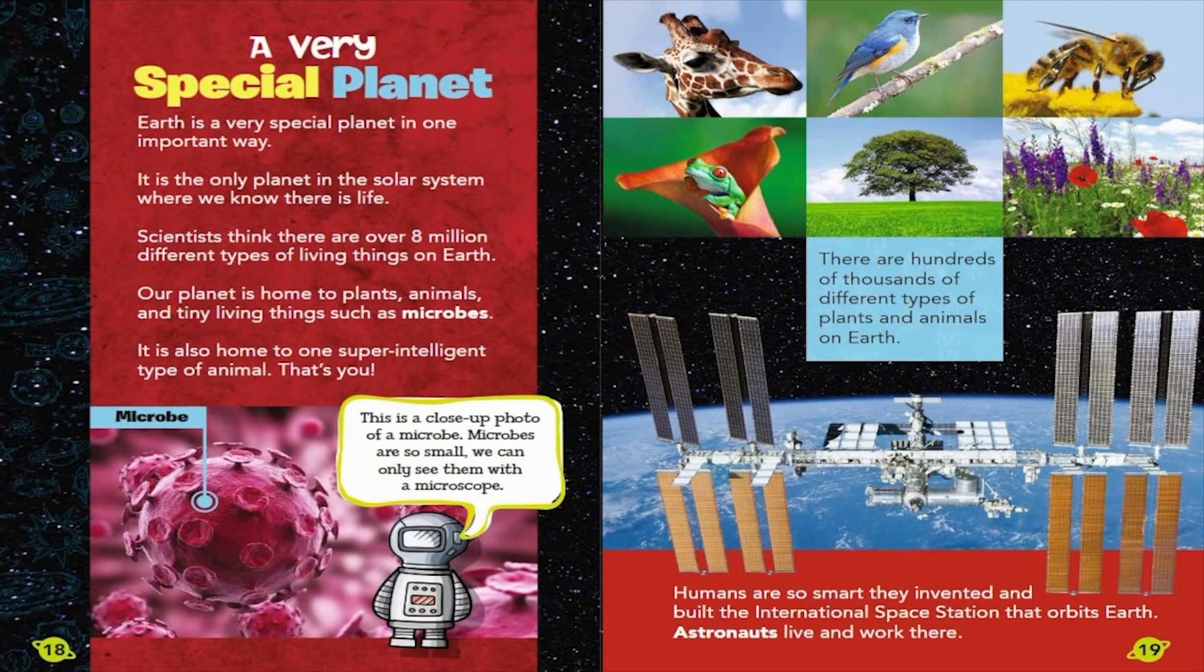A very special planet. Earth is a very special planet in one important way. It is the only planet in the solar system where we know there is life. Scientists think there are over 8 million different types of living things on Earth. Our planet is home to plants, animals, and tiny living things such as microbes. It is also home to one super-intelligent type of animal. That's you!